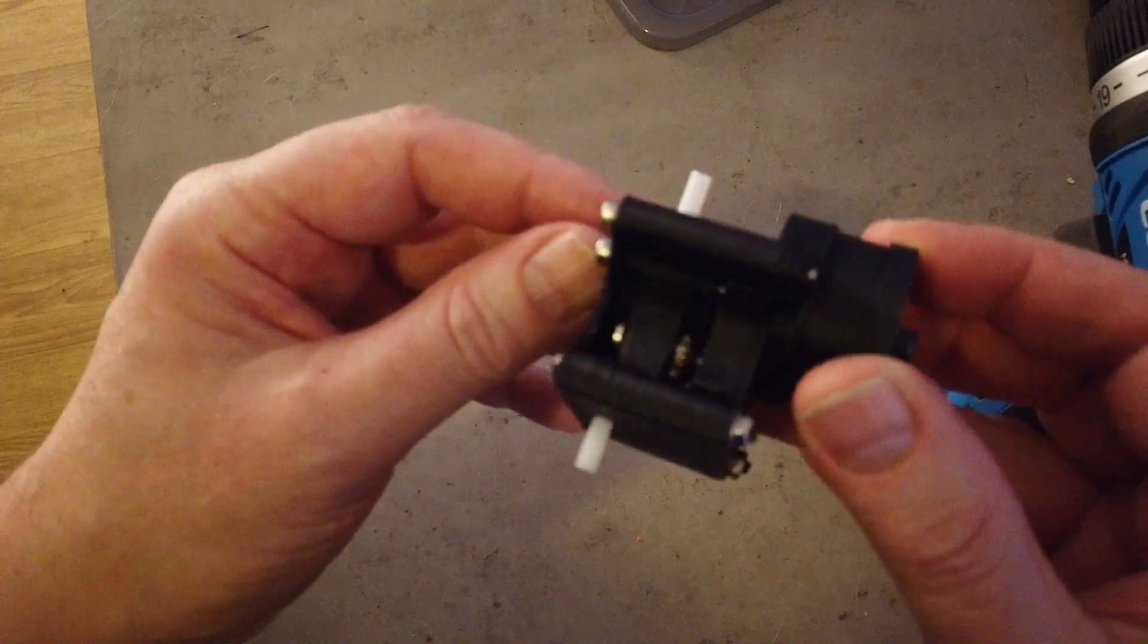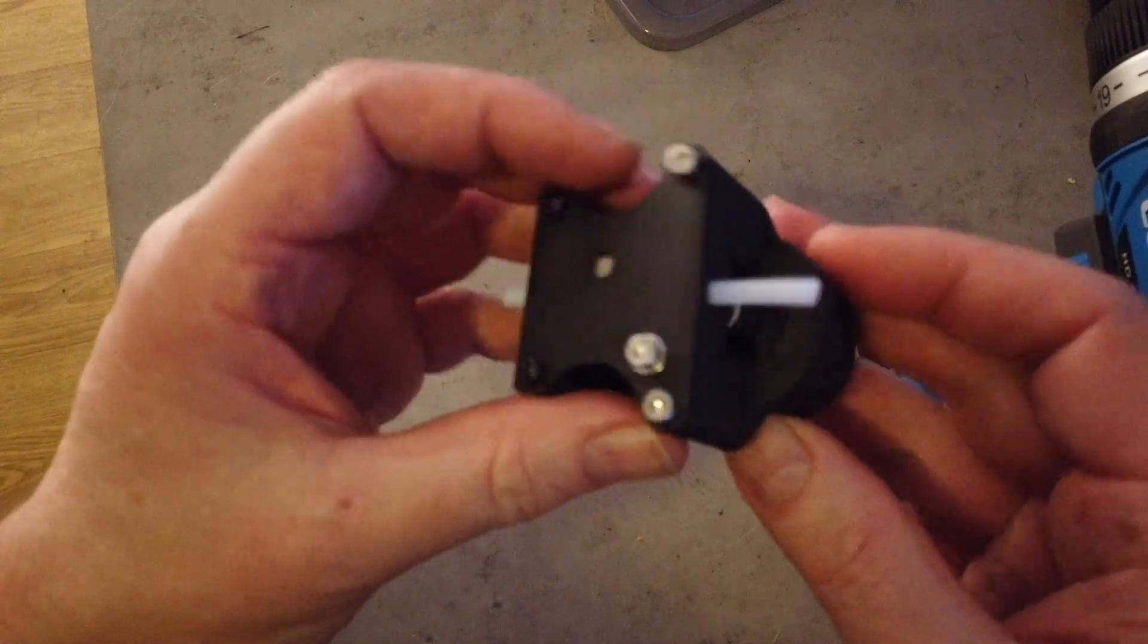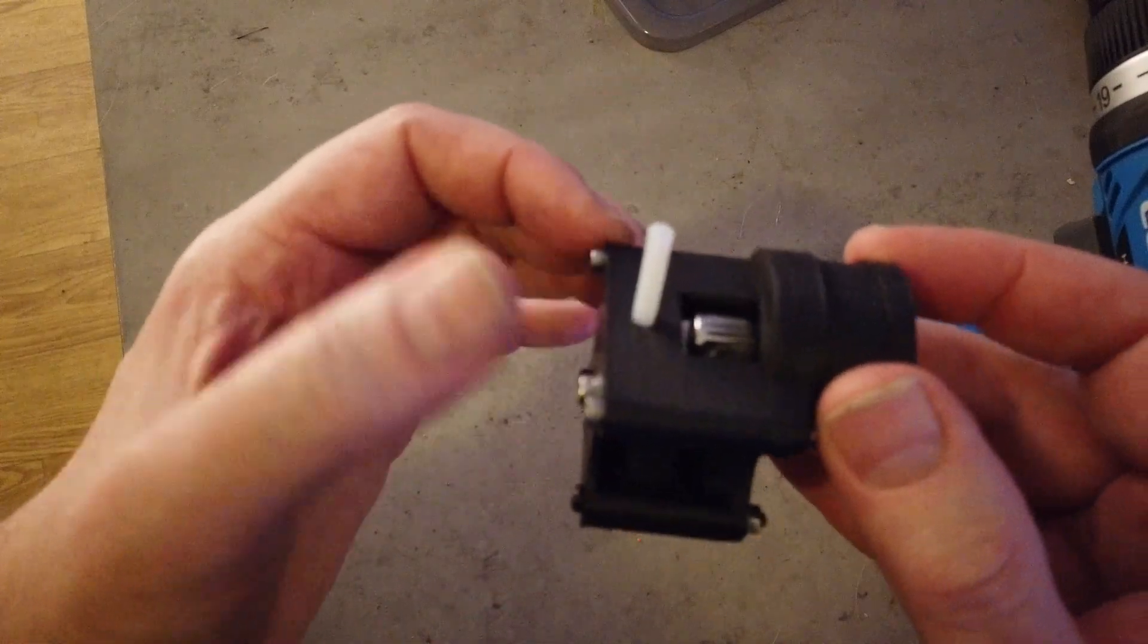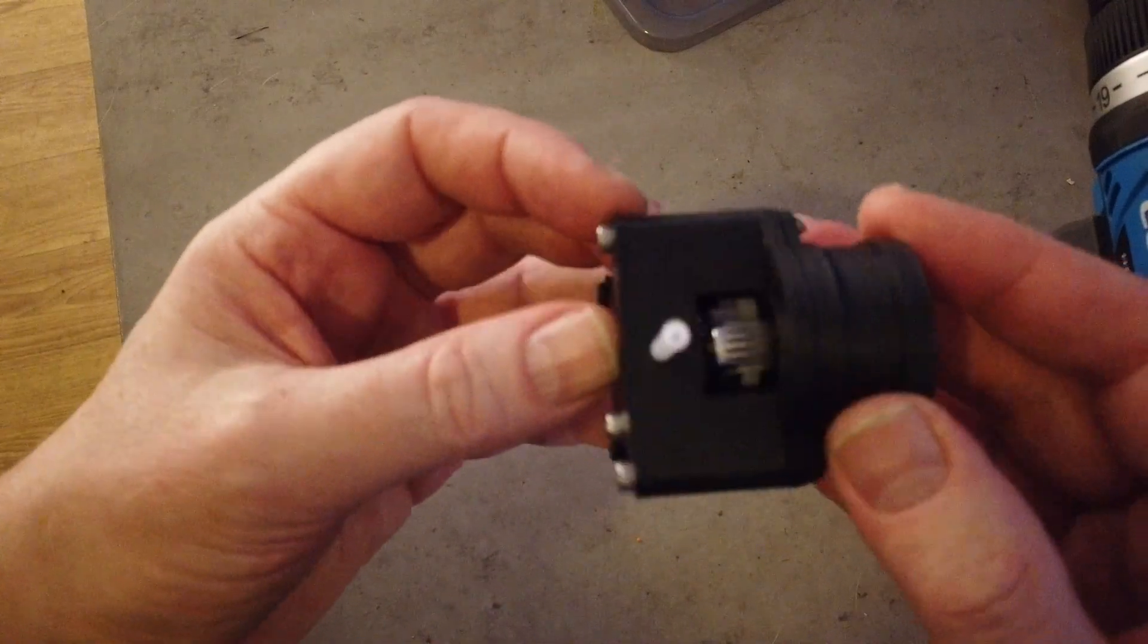I'm trying to design for printability as much as possible. The main body is two parts. All prints without any support. It's very light.